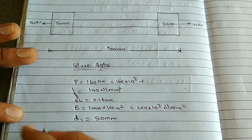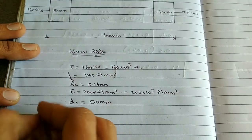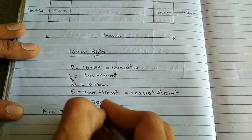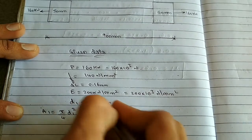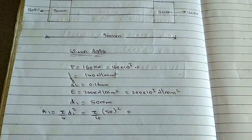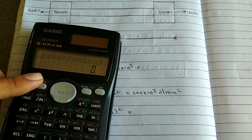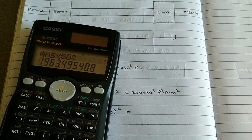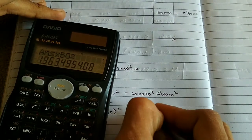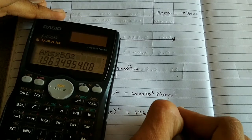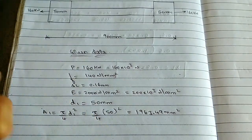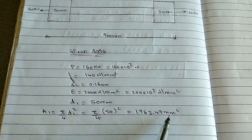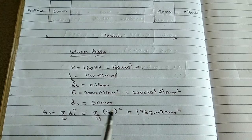Since D1 is given, we can easily find A1. Area A1 equals (π/4) × D1² = (π/4) × 50² = 1963.49 mm². Note that if diameter is in mm, area will be in mm²; if diameter is in meters, area will be in m².